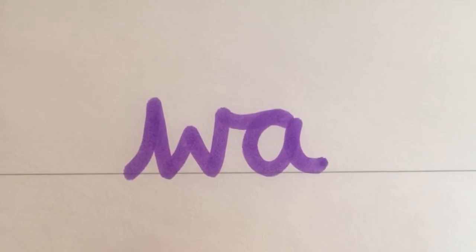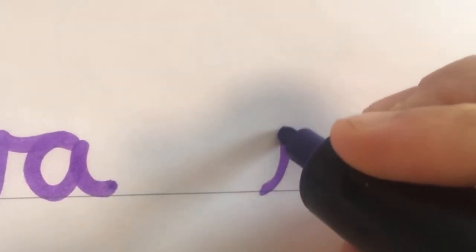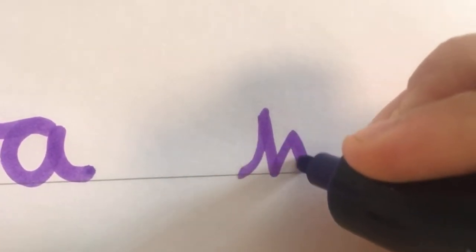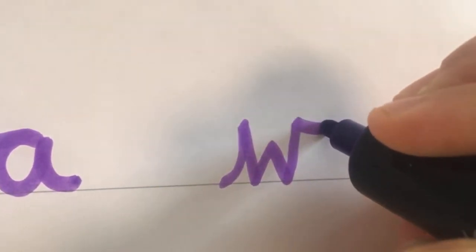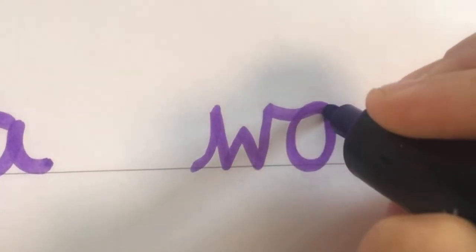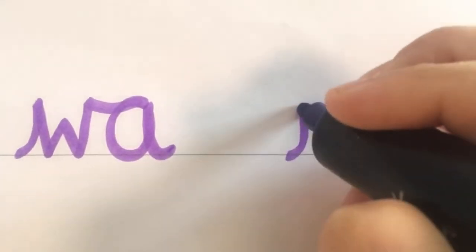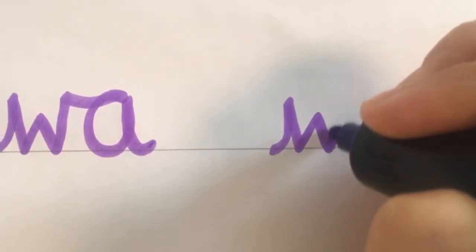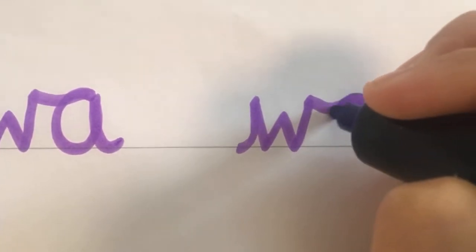The first letter join that we're going to use is a W linking into an A. So I start on the line, up, down and flick out, then I go straight into the top of the A, down to the line, up and round. Let's do that again. There we go.